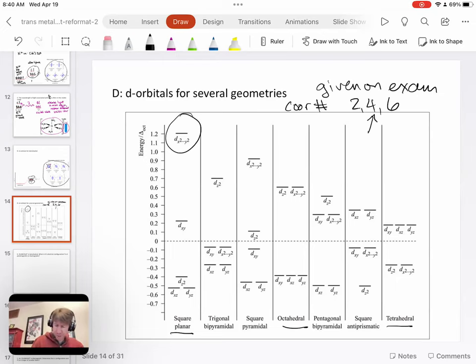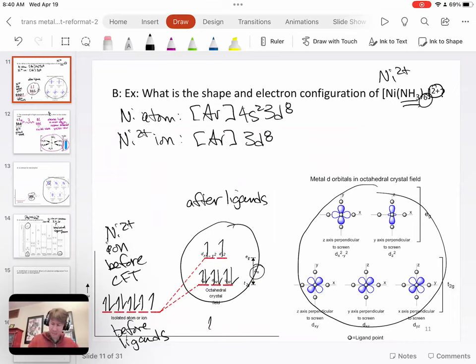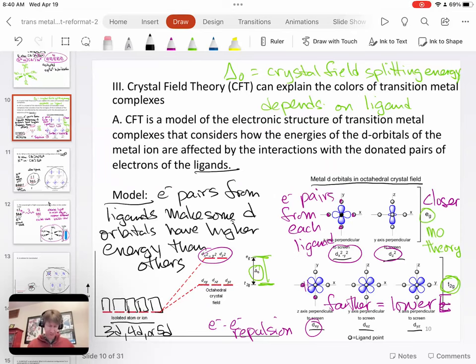Then we told you that for four, there was tetrahedral and square planar. In general, you can look at a compound, AgNH3 two, and tell what its coordination number is. This one has a coordination number of two. If we go back here, here we have a coordination number of six. And the formula helps tell you what the shape is and which of these orbitals to use.